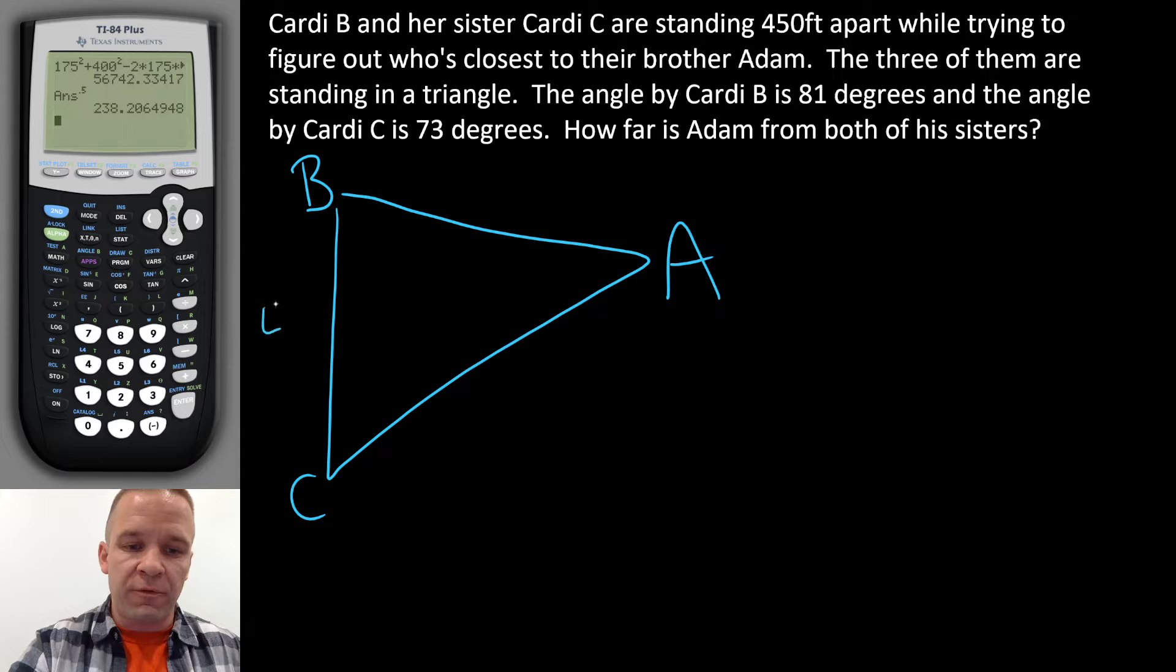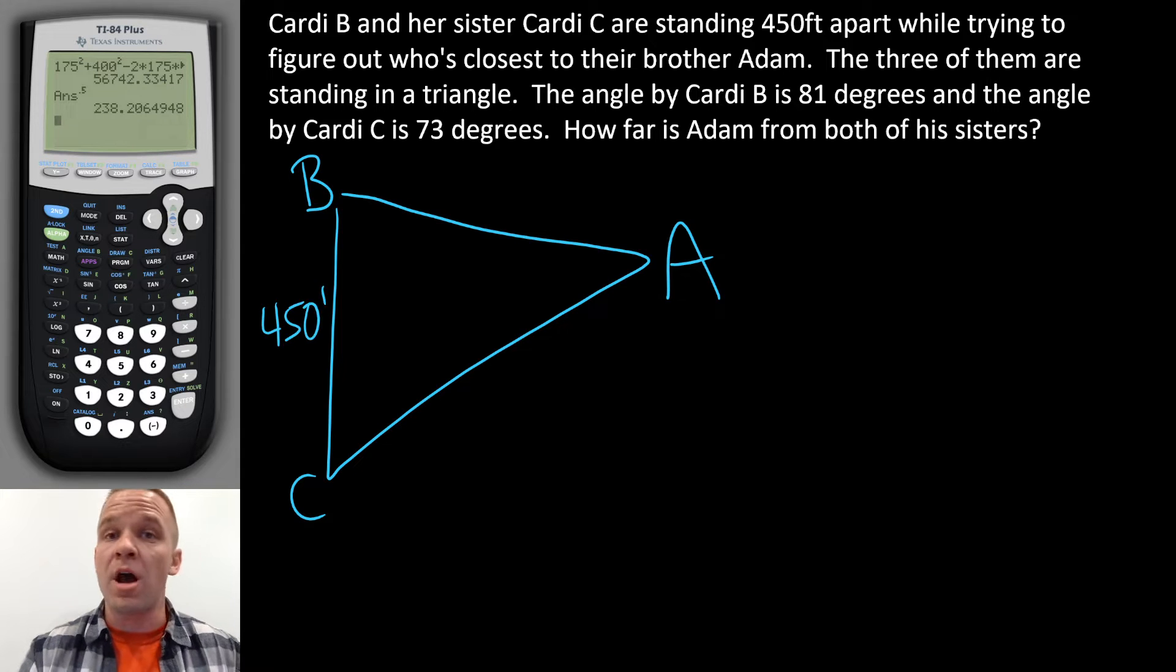Now they are 450 feet apart from each other. The angle by Cardi B is 81, so 81 degrees. The angle by Cardi C is 73 degrees.